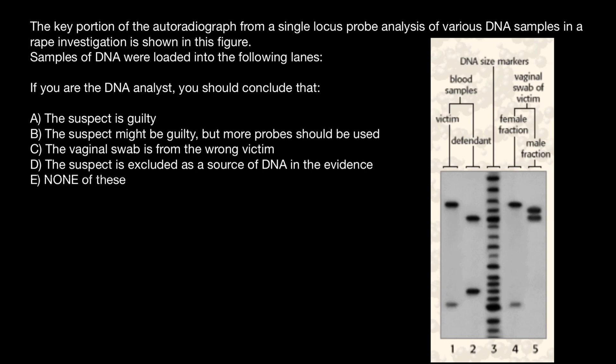Hello, and welcome to Nikolai's Genetics Lessons. Today's video is going to be about forensic genetics. Here's a problem: the key portion of the autoradiograph from a single locus probe analysis of various DNA samples in a rape investigation is shown in this figure. Samples of DNA were loaded into the following lanes: one, two, three, four, five. If you are the DNA analyst, you should conclude — and you have to choose one of these answers.